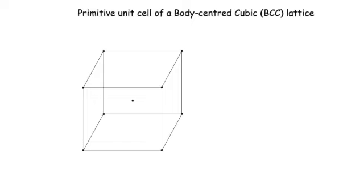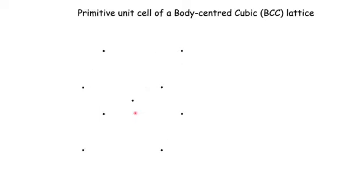Let us consider a body-centered cubic lattice. This lattice is generated by a conventional unit cell as shown here. This unit cell has lattice points at the corners as well as one at the body center. Note that when we say BCC lattice, we mean the points generated by the repetition of this unit cell, and not the unit cell itself.